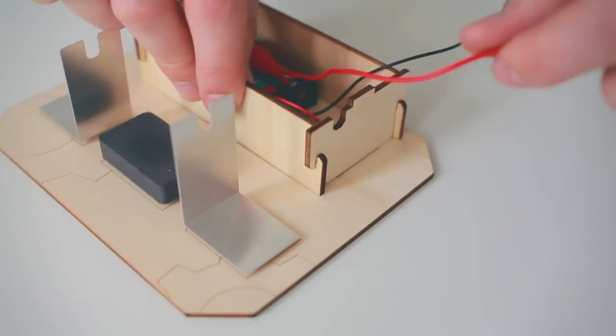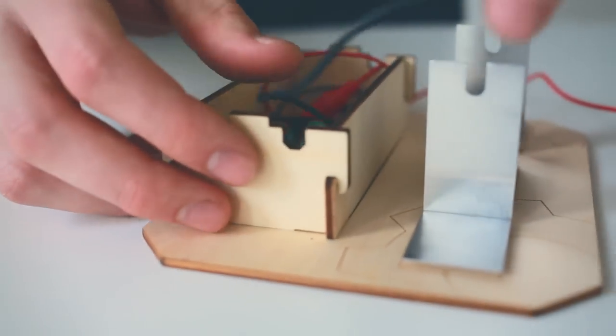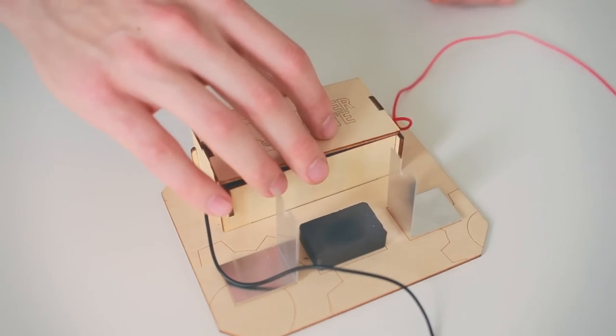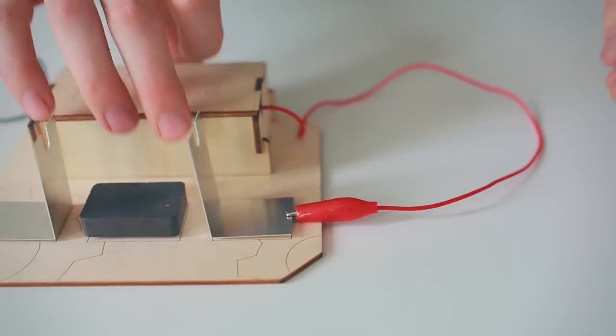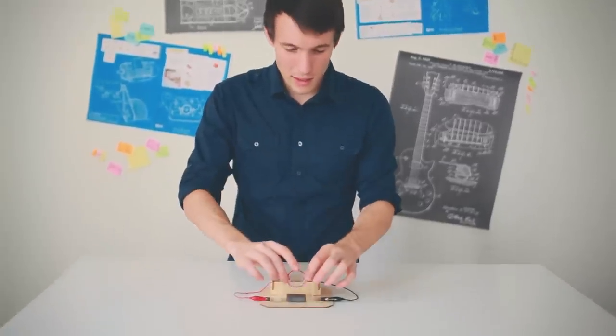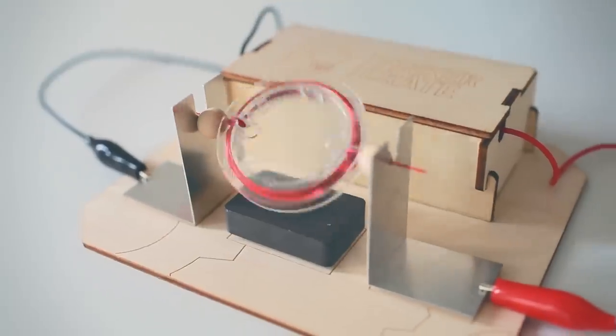Place your battery pack into the little box. Make sure the alligator clips are sticking out of the sides. Then put your lid on and attach each alligator clip to one of the aluminum plates. Take your beads and slide one on each end of your coil. This will help keep your coil centered as it spins. Place your coil into the notches on the aluminum plates. Give it a little spin.